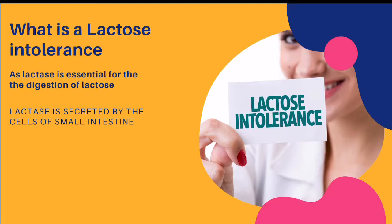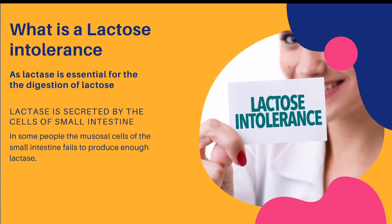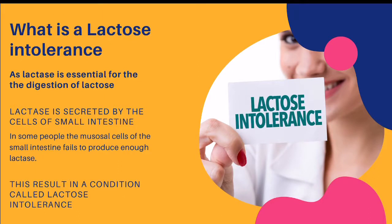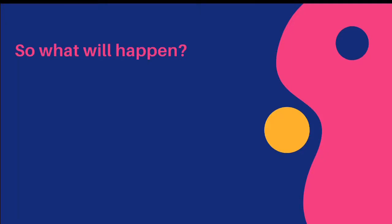Lactase is secreted by specific cells of the small intestine, situated in the innermost layer called the epithelium. These epithelial cells secrete intestinal juice, and lactase is found in the plasma membrane of the microvilli. In some people, these cells of the small intestine fail to produce enough lactase, and this condition is called lactose intolerance.